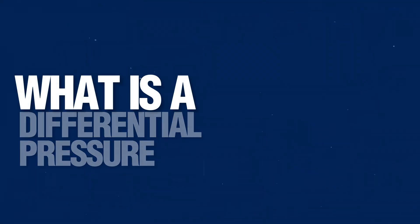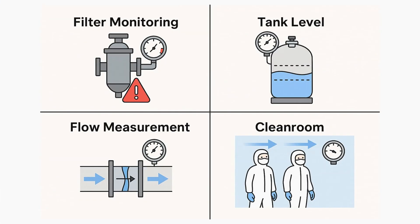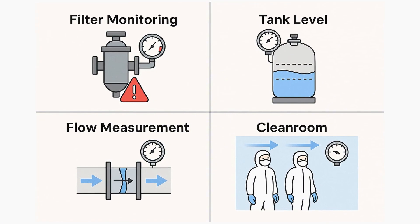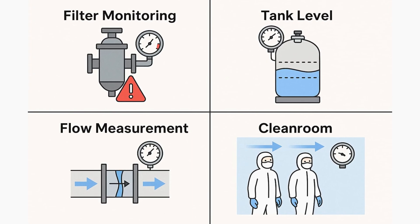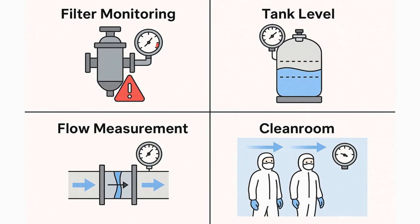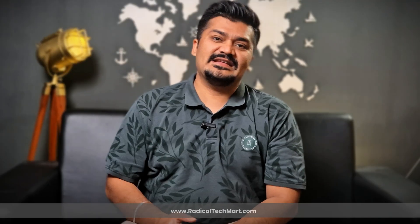A differential pressure gauge measures the difference between two pressure points in a process. It doesn't just show one pressure reading — it shows the pressure difference, which is crucial in many applications like monitoring filters and strainers, measuring liquid level in pressurized tanks, calculating flow across an orifice plate or restriction, ensuring clean room pressure balance, and detecting clogging in HVAC ducts and filters.